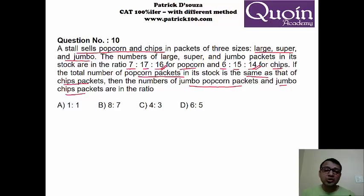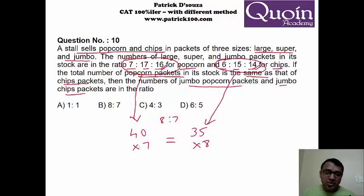The condition is that the total packets has to be the same. If you look at the popcorn packets, the total number of packets becomes 40. Seven plus 17 plus 16 is 40. Same way if you look at total number of chips packets 6, 15, 14, add it up, it becomes 35. Now if you look at this number, this is 8 is to 7. But they said that total popcorn packets have to be same as chip packets. To make it same, I have to multiply this by 7 and multiply this by 8. It will be equal.